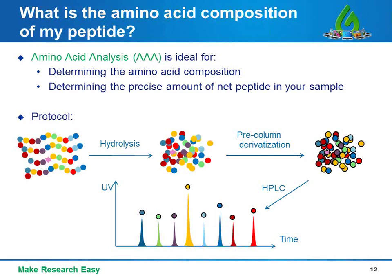In AAA, custom peptides are first hydrolyzed by concentrated hydrochloric acid into single amino acids. After pre-column derivatization, single amino acids are coupled with a special chemical motif that enables detection by reverse-phase HPLC and UV absorption. The final mixture of derivatized amino acids is separated by reverse-phase HPLC, and using integrated peak areas compared against standard amino acid samples, the concentration and composition of each amino acid in the custom peptide is determined.